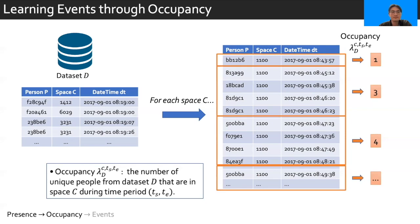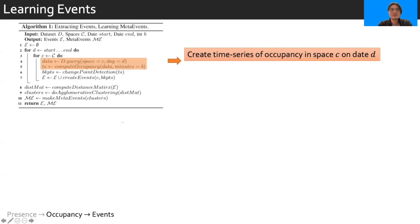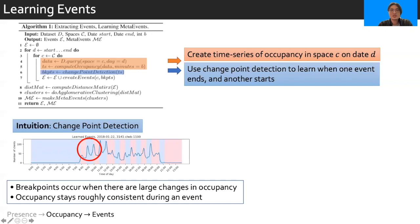We use the occupancy extracted for a given space to characterize the existence of an event. First, we start by extracting the time series of occupancy as was described before, for each space C and each date D. Then, to capture this idea of events switching when there are large changes in occupancy, we rely on another algorithm, the change point detection algorithm. This algorithm typically has roots more in digital signal processing, but it addresses the idea of finding when one event ends and a new one starts. The intuition for change point detection is just as mentioned. The change point detection algorithm is going to detect these breakpoints, which are going to be times where there are large changes in occupancy. Then, by going through each space C and date D, this process will give us a set of all events in the smart space.